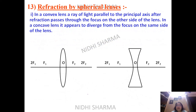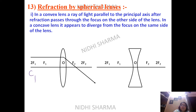Now we come to refraction by spherical lenses and the rules. Rule number one: if a ray passes through the lens coming parallel to the principal axis, it passes through the focus. When drawing a lens diagram, you show both sides — F1, F2, C1, C2 — and the optical center. F1 is where all rays either actually meet or appear to meet, and lenses have double foci on both sides.